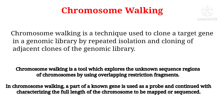Chromosomal walking can only sequence and map small lengths of chromosomes, while chromosomal jumping enables the sequencing of large parts of chromosomes. That is the key difference between chromosomal walking and chromosomal jumping.